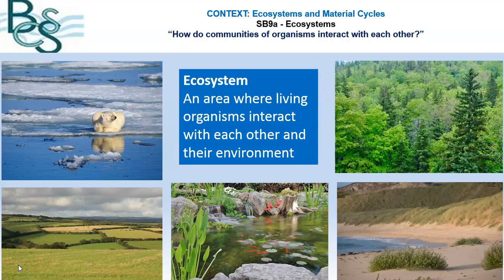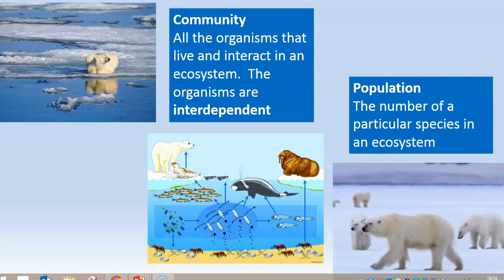If we look at the arctic region, we've got a polar bear, but we're also going to have sea lions, fish, the fact that it gets really cold, really windy, very wet, and salty. So the ecosystem is all of that interacting together. If we focus in on the arctic ecosystem and look just at the living part of the ecosystem — the living organisms within it — we call that part the community.